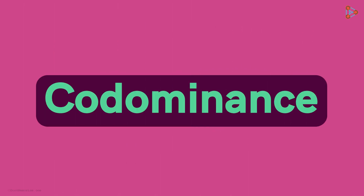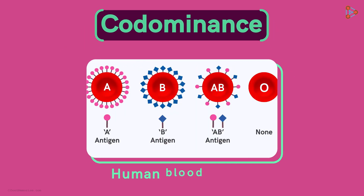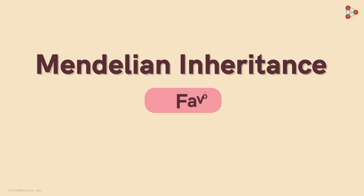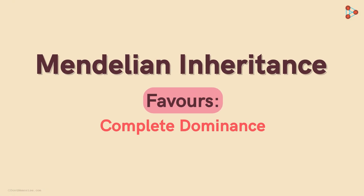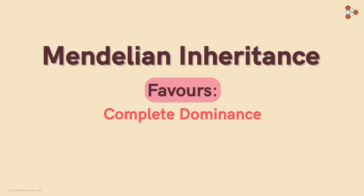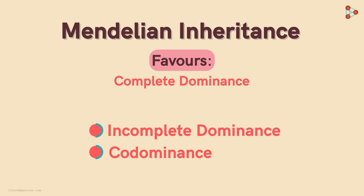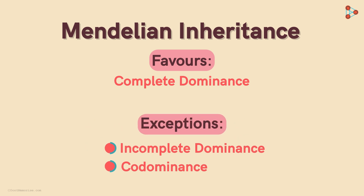Co-dominance is found widely in nature. Common examples include human blood groups and coat colour in cattle and many other animals. Mendelism revolves around complete dominance as it doesn't favour blending of characters. Hence, incomplete dominance and co-dominance are commonly studied as exceptions to Mendelism.